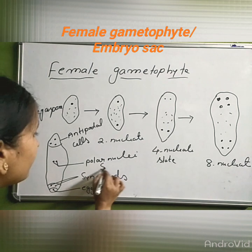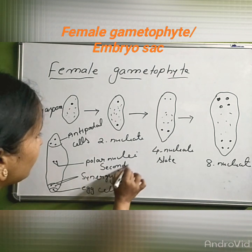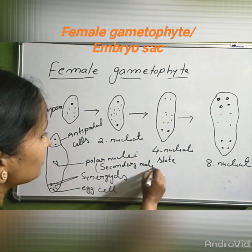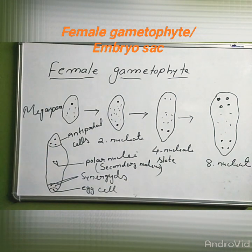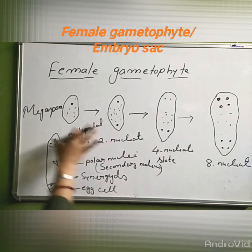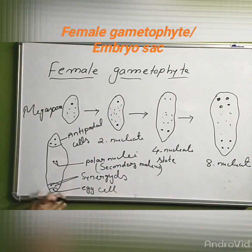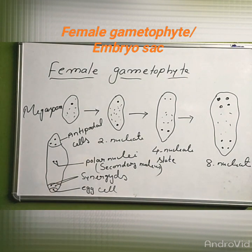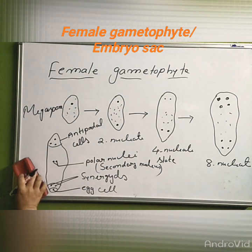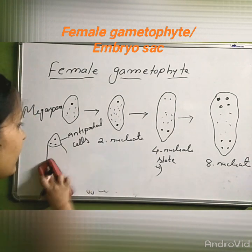These polar nuclei are also called the secondary nucleus. At the micropylar end, the three cells are called antipodal cells. One cell remains as the egg cell and the other two are called synergists. Synergists provide nourishment to the egg cell. This completes the explanation of the female gametophyte development. Thank you very much.